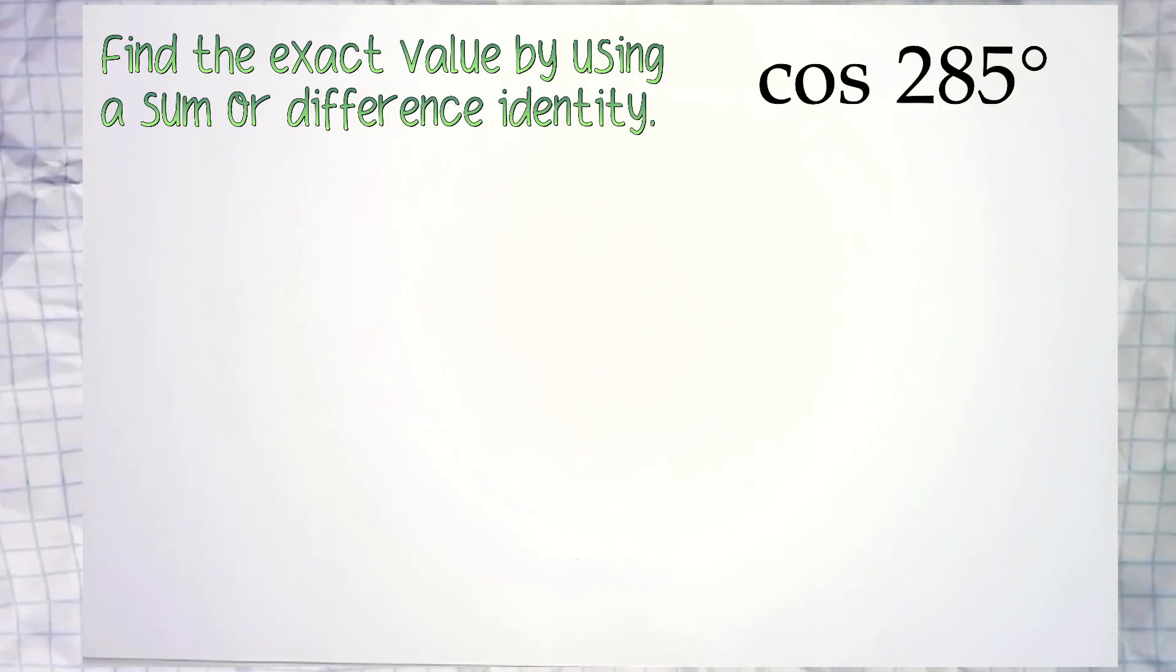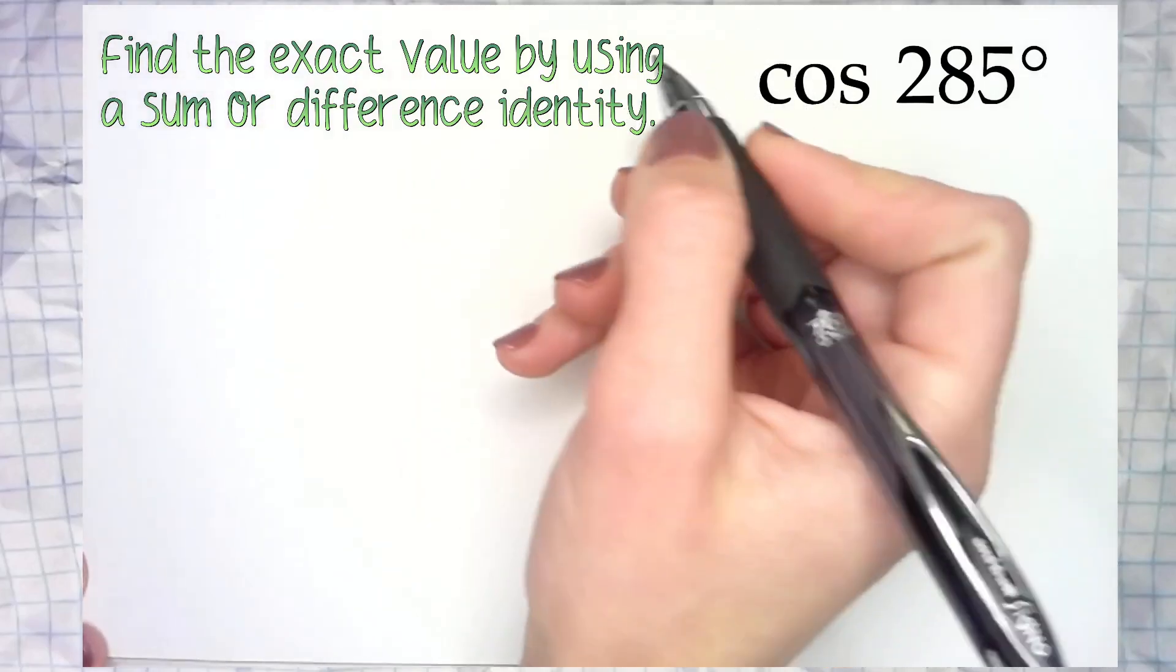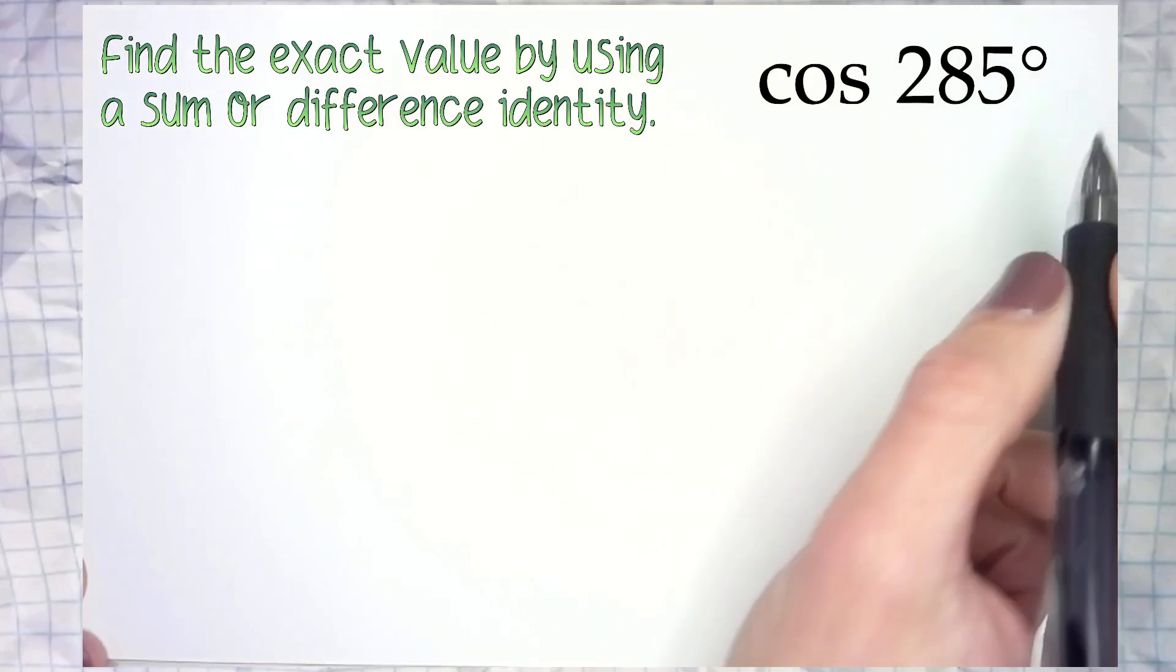Hey everybody, in this video we are going to find the exact value of the cosine of 285 degrees by using an angle sum or difference identity. I tend to default to using an angle sum identity, starting with one of my angles, either alpha or beta, being 45 degrees, or if it's in radians, pi over 4.